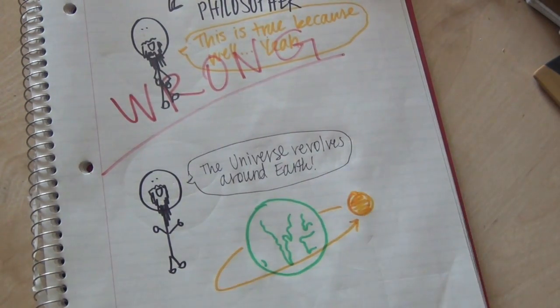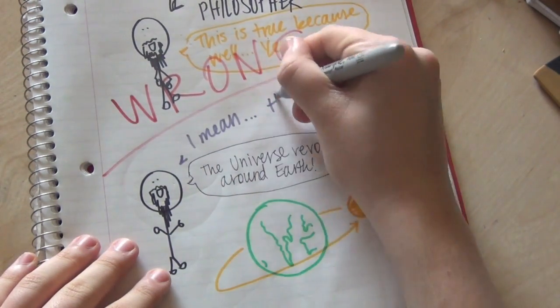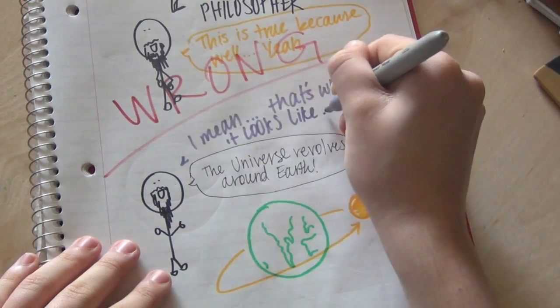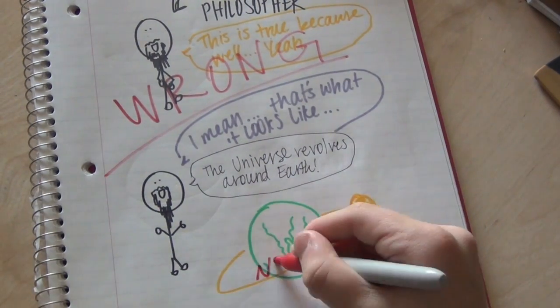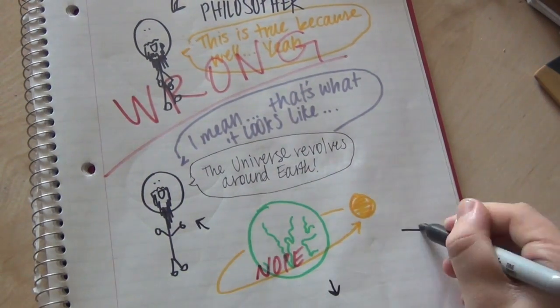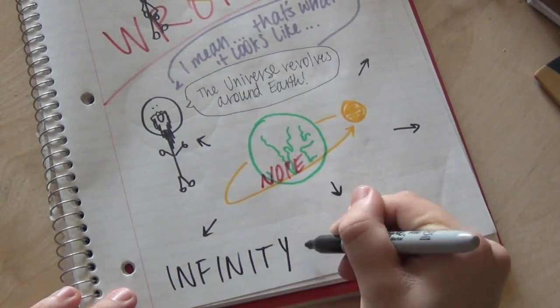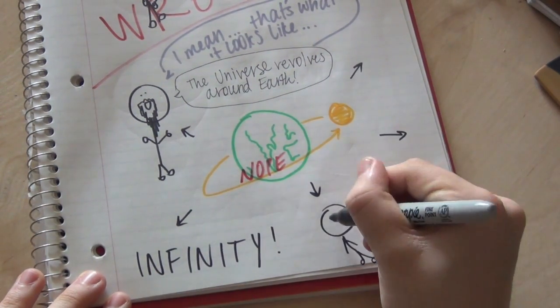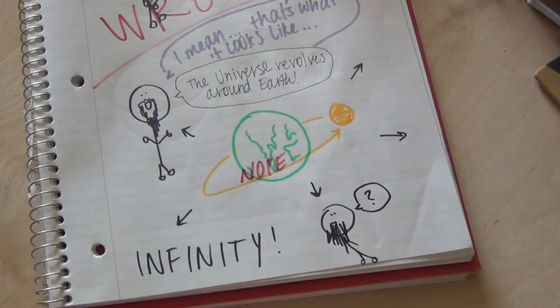So when Aristotle said the sun rotated around the earth, he just said that because it looked like the sun rose and set, and the earth was fixed, because he was on earth, and he didn't really notice that the universe was infinite. But you can't really blame him, because the Greeks had a different way of looking at infinity than we do.